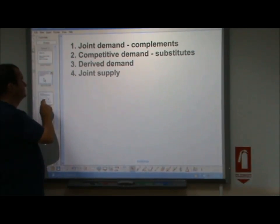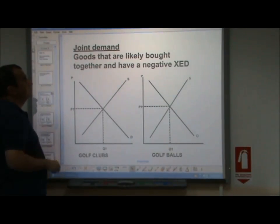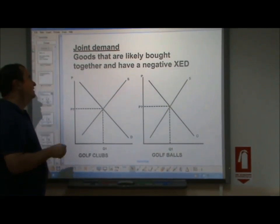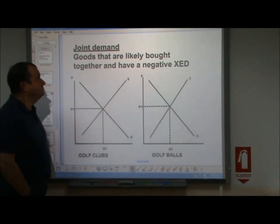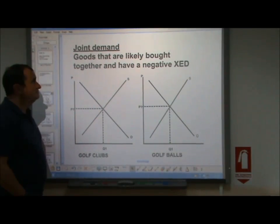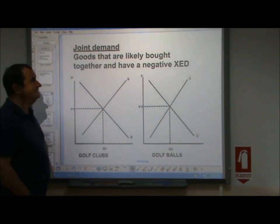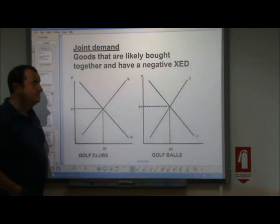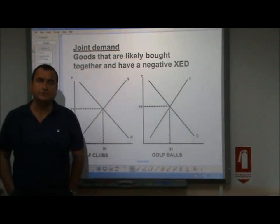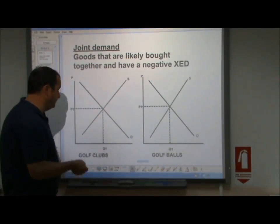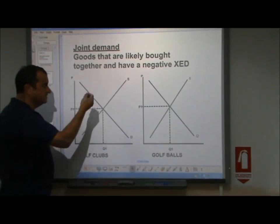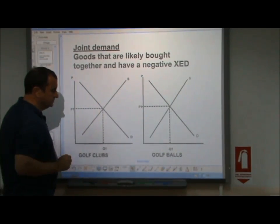Let's take the first one: joint demand. Goods that are likely to be bought together and have a negative cross elasticity of demand (XED) are said to be in joint demand. An example is golf clubs and golf balls.